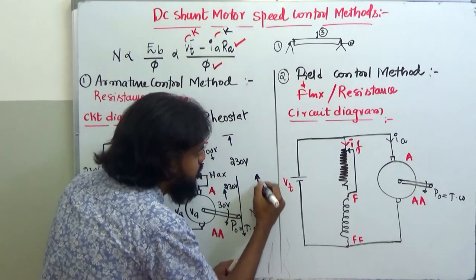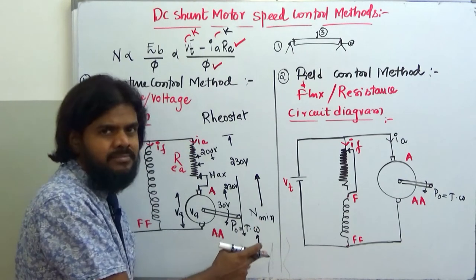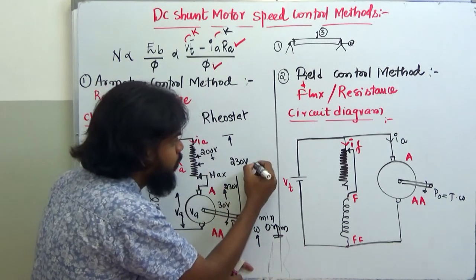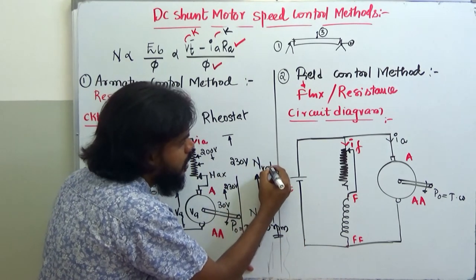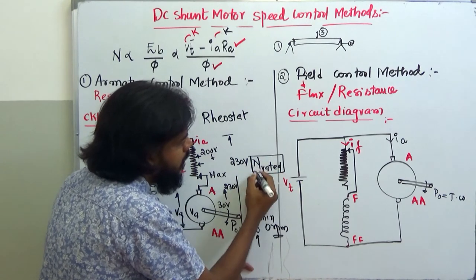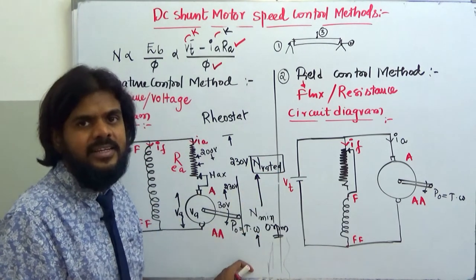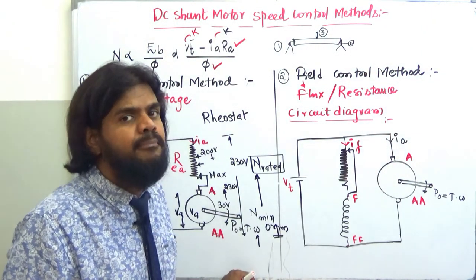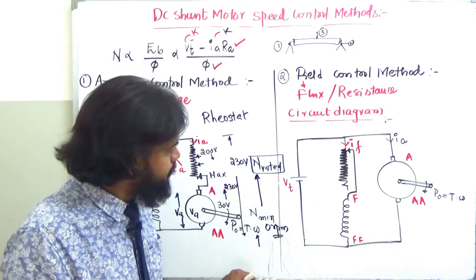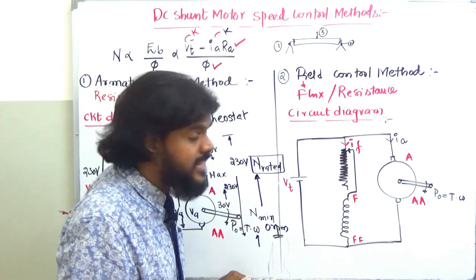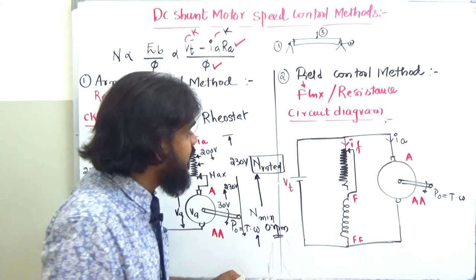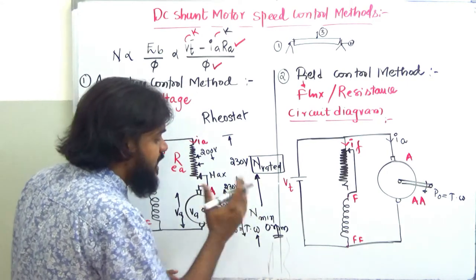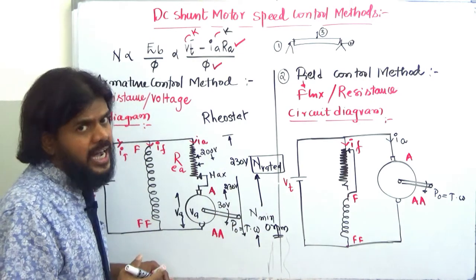As the armature resistance is cut down to zero, the voltage across the armature rises from zero up to the rated supply of 230 V, and thereby the speed rises from its minimum — approximately zero rpm — up to the rated rpm.